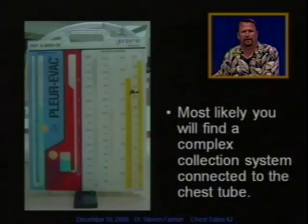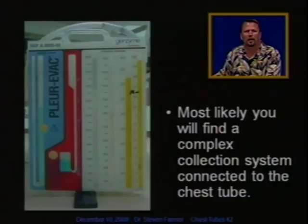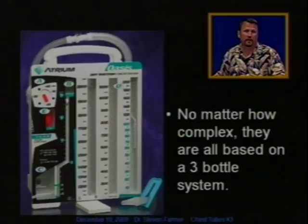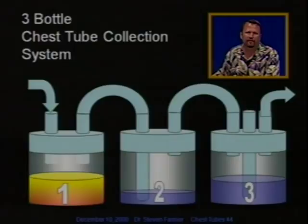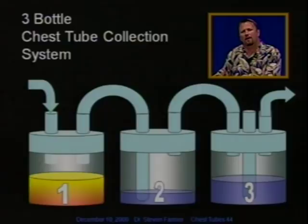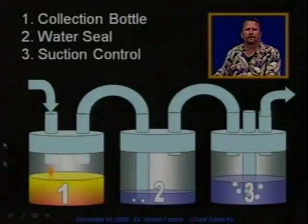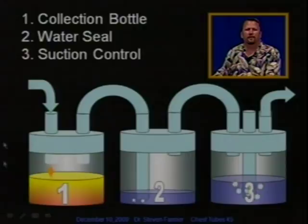In a hospital, you'll most likely find a very complex collection system connected to the chest tube. No matter how complex, they are all based on a three-bottle system. In this three-bottle chest tube collection system, bottle one is the collection bottle — we can see fluid from the chest tube dripping into it. Bottle two is the water seal. Bottle three is suction control, which ensures a consistent and precise amount of suction is applied to the system.